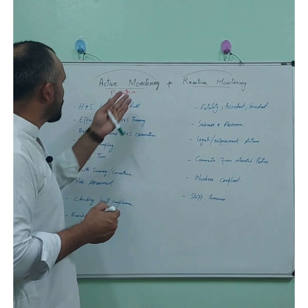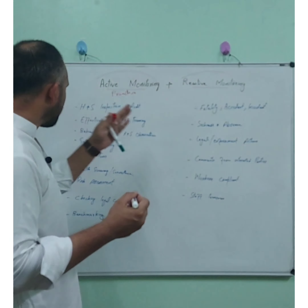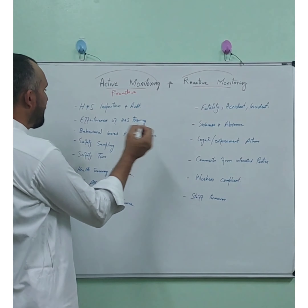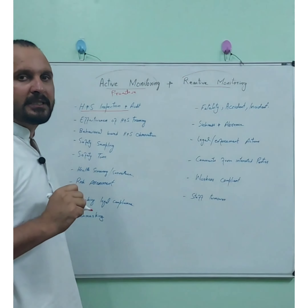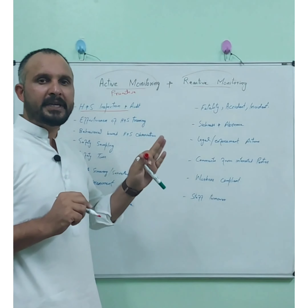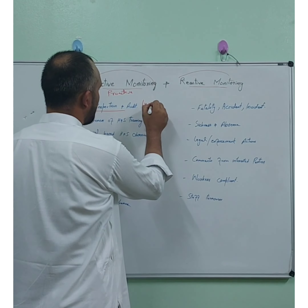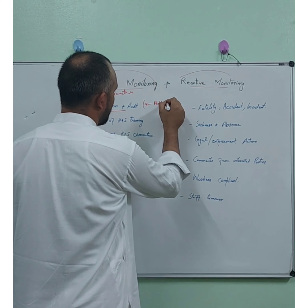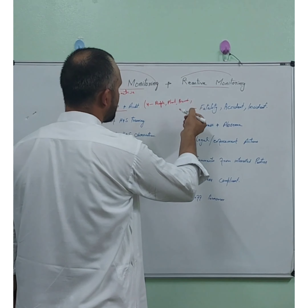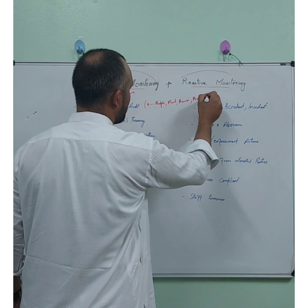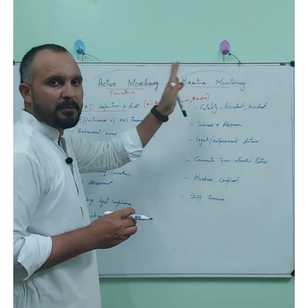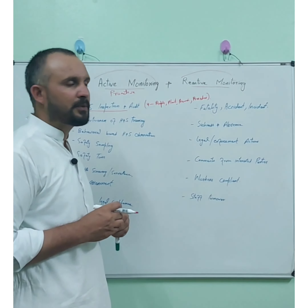First, we will discuss active and proactive monitoring and what we need to do to make sure our workplace will not have accidents. First is regular inspection. What is inspection? I have made a video about this on my channel. Inspection has four key elements: People, Plant — which means equipment — Premises, meaning the site or workplace, and Procedure. We can inspect whether procedures are up to date or not.